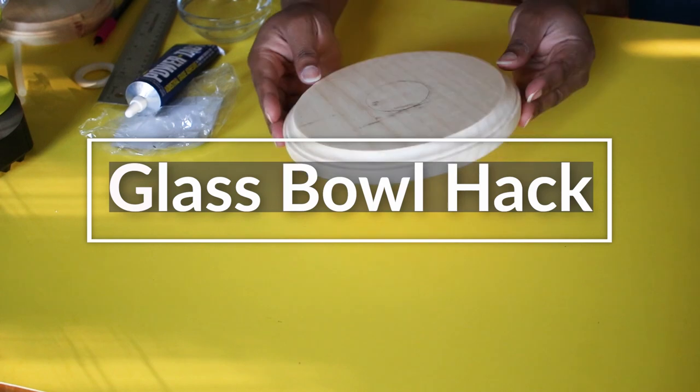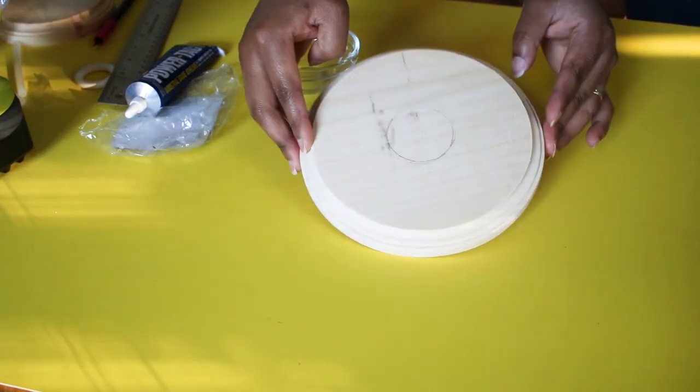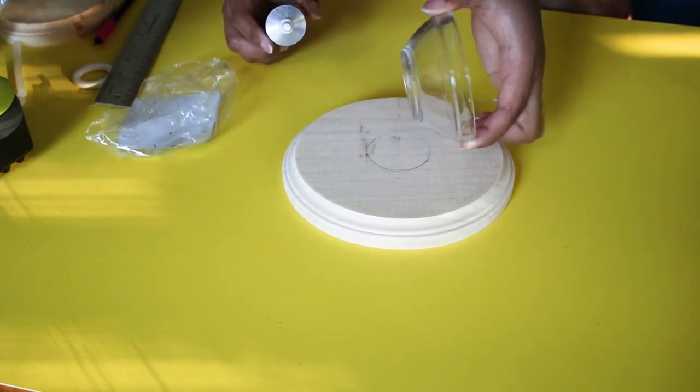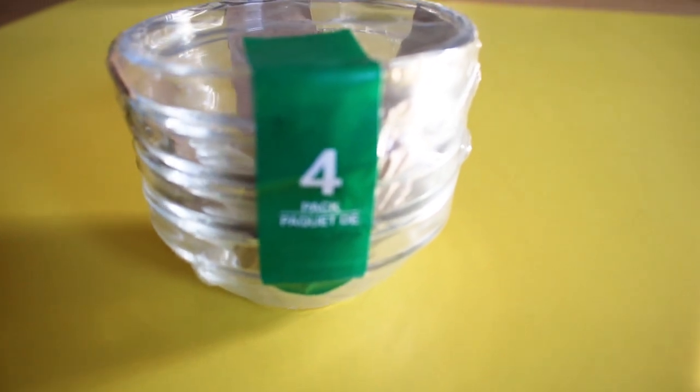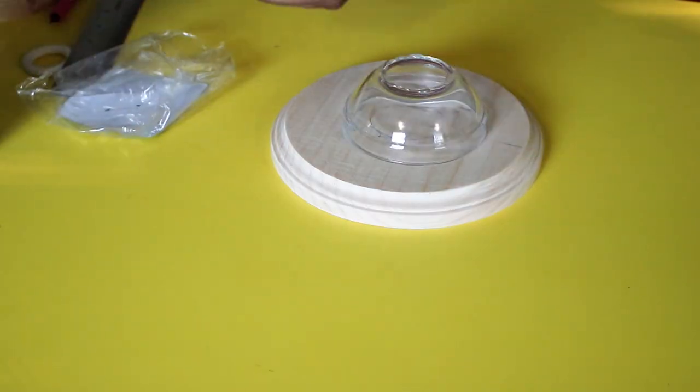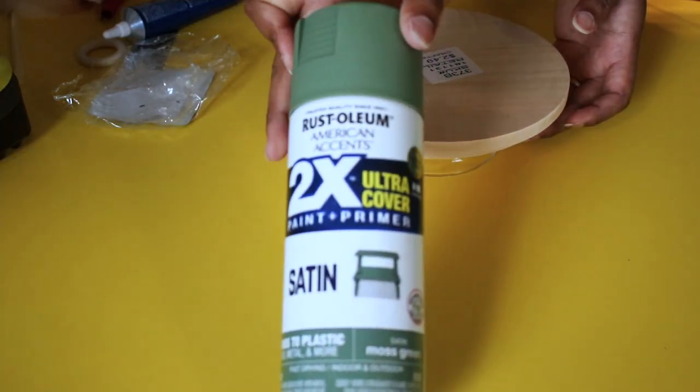This third Dollar Tree hack is my favorite. I'm using one of these wood rounds from Hobby Lobby, and this mini glass bowl that comes in a four-pack from Dollar Tree. I glued the bowl onto the wood round with the same glue combo and spray-painted it in this green color.